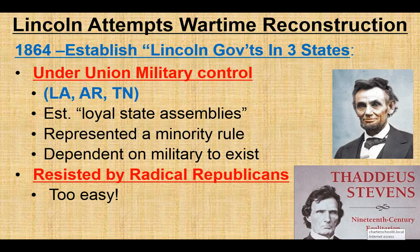As the war is going on, he's actually establishing what came to be known as Lincoln governments in three states — Louisiana, Arkansas, and Tennessee. If you look at the map, these are connected to very major waterways where Union armies are flowing into them and controlling them. They establish loyal local state assemblies there. It's really a minority rule of Republican-minded, Union-minded people, dependent on the military to exist. But the Radical Republicans, like Thaddeus Stevens — a key person to know — resist this idea of reuniting the country while the war is still going on.